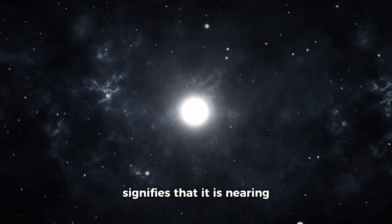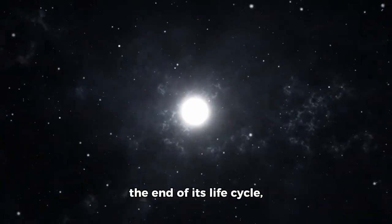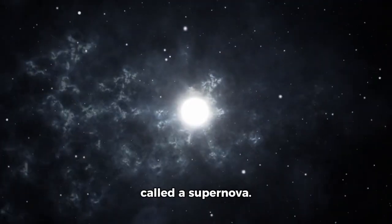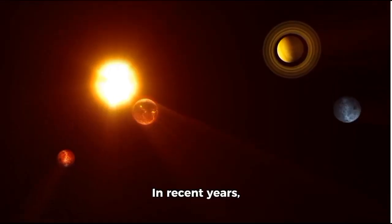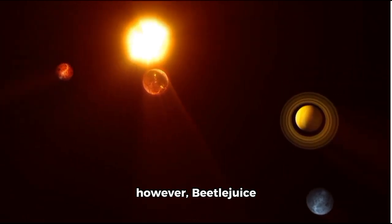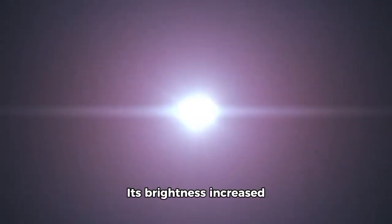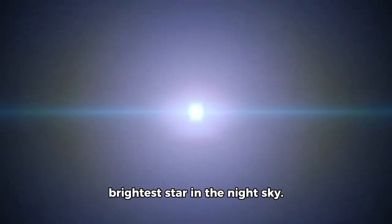The expanse of this star signifies that it is nearing the end of its life cycle, preparing to culminate in a catastrophic explosion called a supernova. In recent years, however, Betelgeuse has exhibited extremely unusual behavior. Its brightness increased by more than 50%, launching it from the 10th to the 7th brightest star in the night sky.